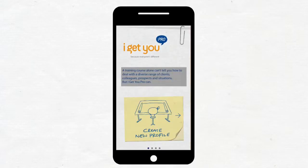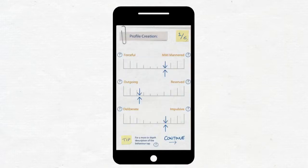I Get You Pro is an app that enables you to profile customers to determine how best to communicate with them and help you win more sales.